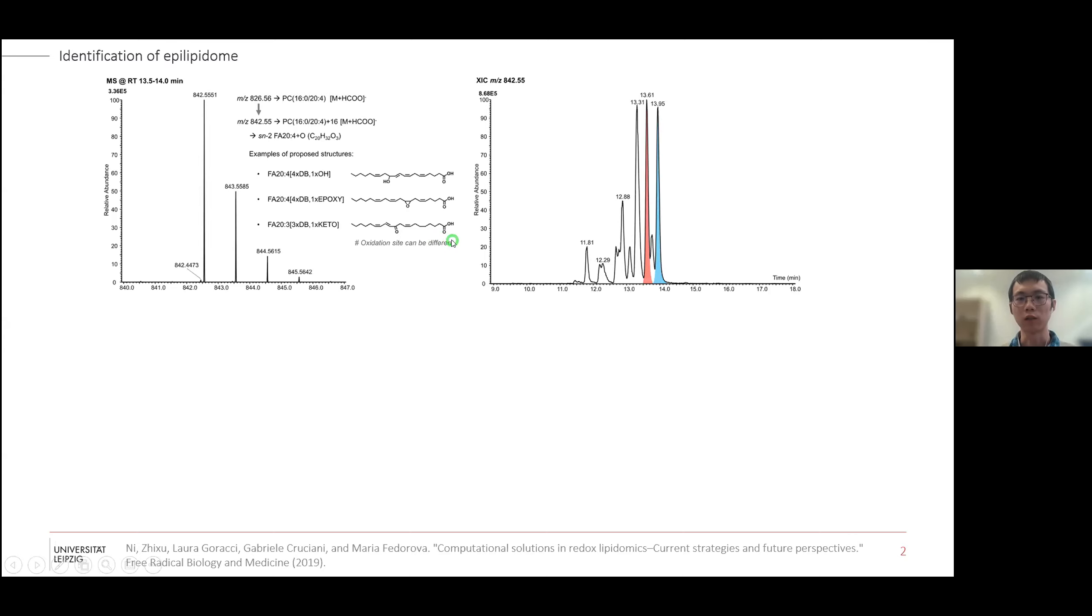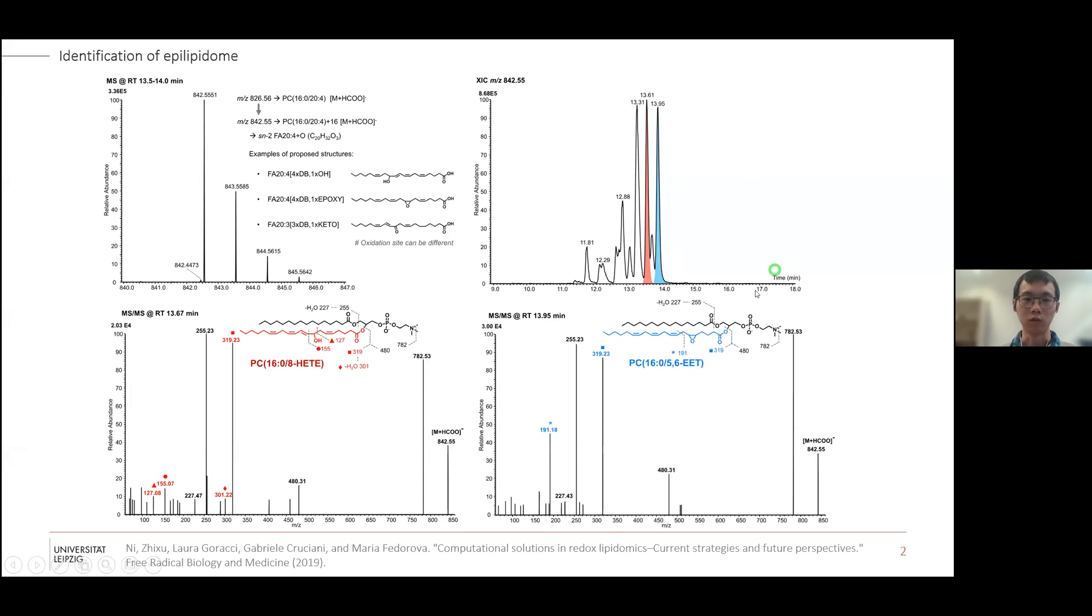We know that by LC chromatography we can separate these isomers in different retention times. They have similar but different fragmentation patterns which reveal their slightly different structures, and they have potentially different functions. So it's very important to identify these oxidations on the fatty acid level.